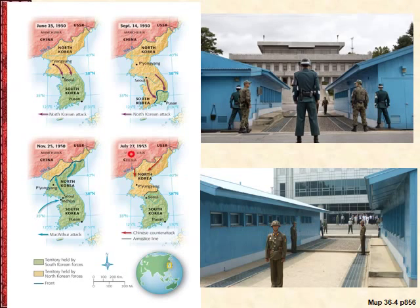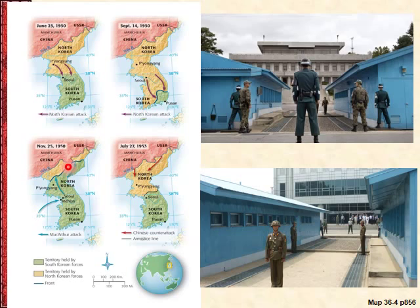The map shows the 38th parallel — North Korea invades the south all the way down to the southeastern tip near Pusan. Then comes the infamous Incheon landing right by Seoul; MacArthur pushes the North Koreans all the way back north. But getting too close to the Yalu River causes China to intervene, pushing all the way back to what is now the modern boundary. This boundary is slightly different from the 38th parallel, and along it is the Demilitarized Zone — the DMZ.